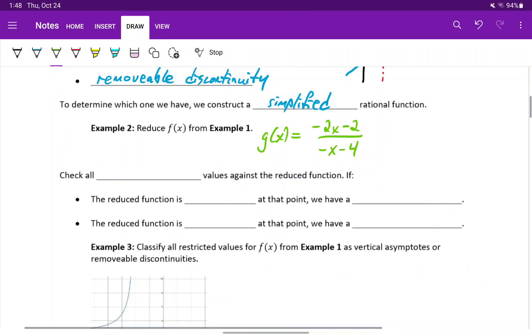Next what we'll do is check all of our restricted values against that reduced function, and if the reduced function is still undefined at that point, then we have a vertical asymptote.